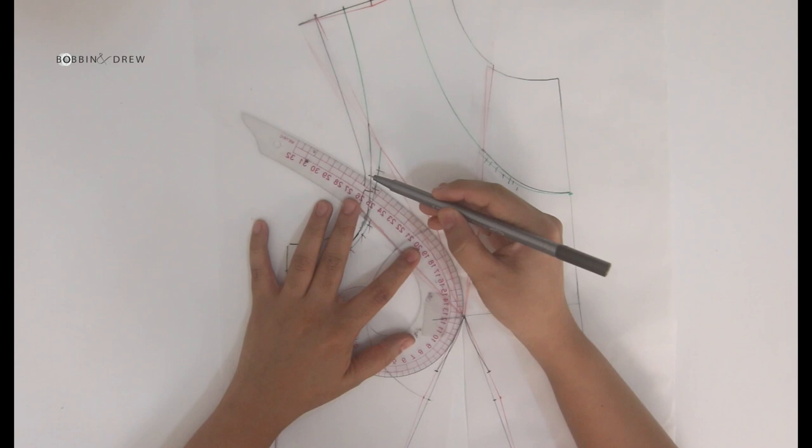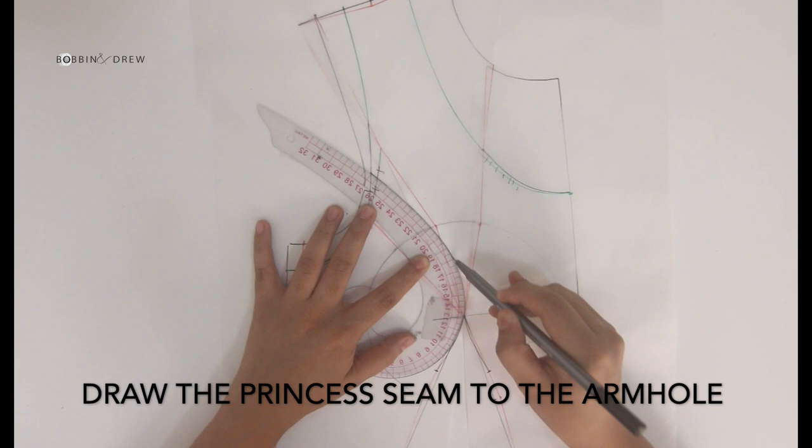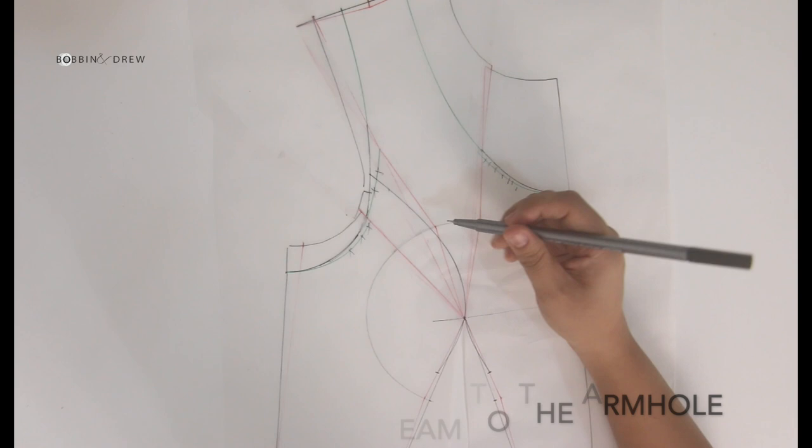Next we draw the princess seam just above the armhole notch, about 1/4 of an inch to 3/8 of an inch, and please don't forget to add the notch marks because this will help us when we stitch this garment.